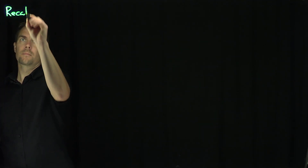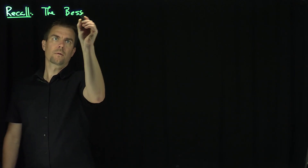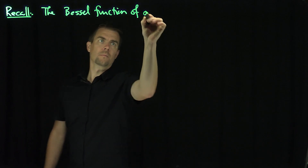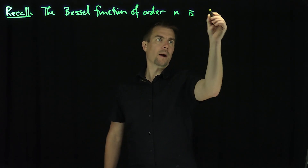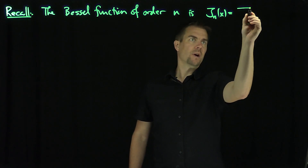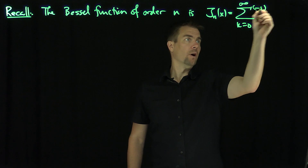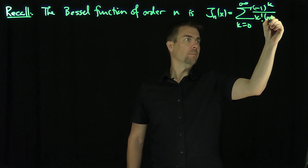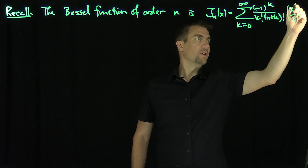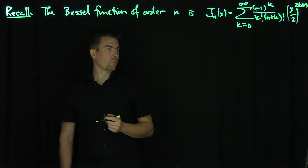Let's recall the Bessel function of order n, where I'm assuming that n is going to be an integer. J_n(x) is equal to the sum, k goes from 0 to infinity, of (-1)^k over k! times (n+k)! times (x/2)^(2k+n). That's my Bessel function of order n.